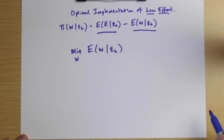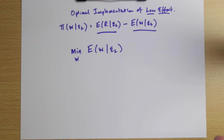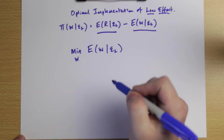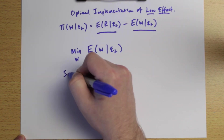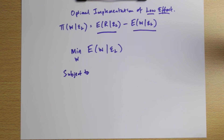We need more than pure cost minimization though. The contract with the globally minimum cost would just pay the employee zero in both states, and an employee is very unlikely to accept such a contract. So we need a constraint that says the employee accepts the contract — this is the participation constraint.